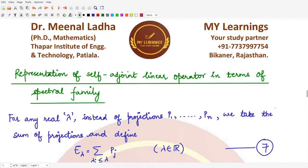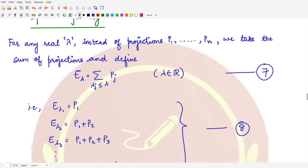Hello everyone, welcome to this video. In this video we'll be talking about self-adjoint linear operators and representing them in terms of their spectral family. Let's build up on the concept of representing the given operator T in terms of its projections, and see how we can further simplify the results. For any real lambda — which is the given eigenvalue — instead of using projections P1, P2 up to Pn, we can use the sum of these projections.